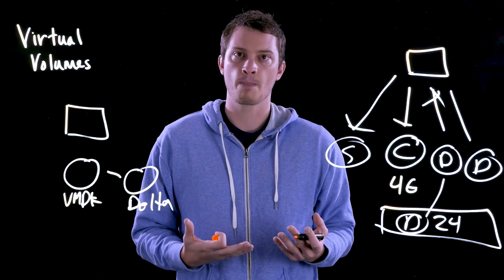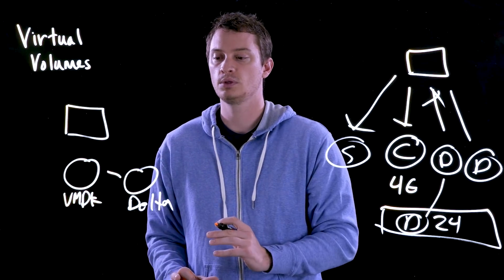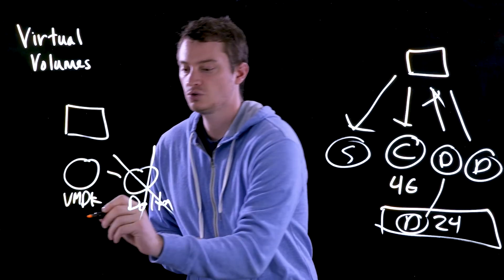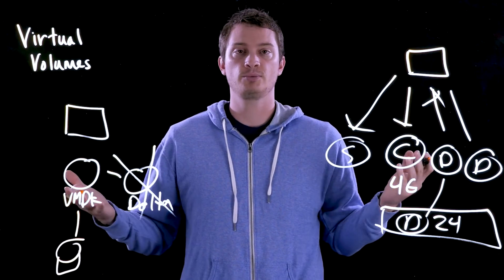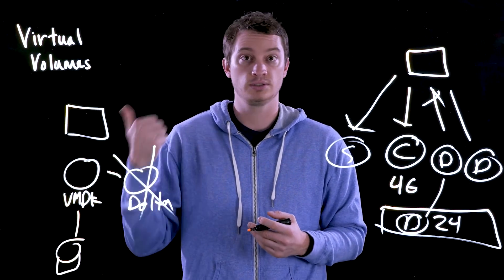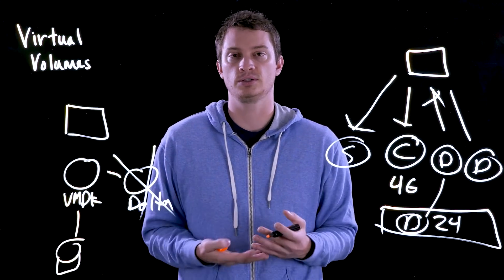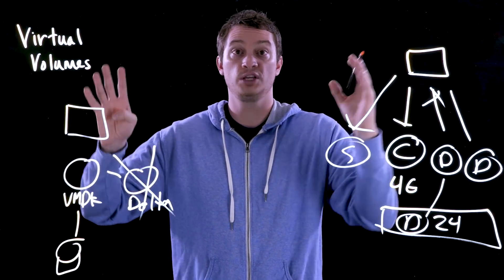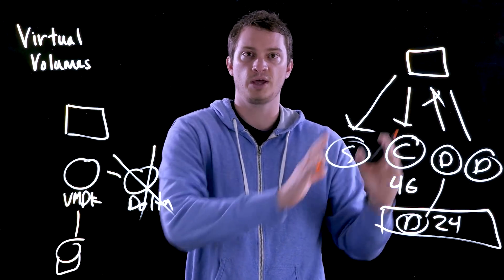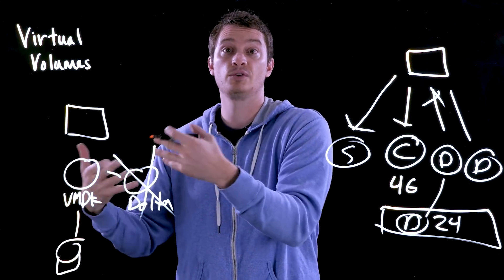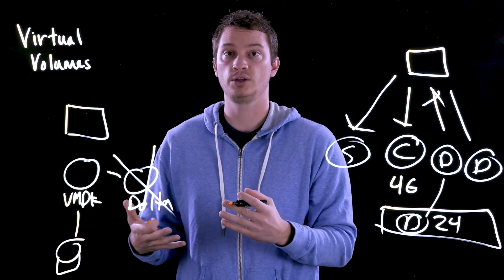But when using vVols, the snapshot changes. Because a data vVol is a volume on the array, instead of this whole delta VMDK thing, it creates an array-based snapshot. On the FlashArray, we can create snapshots instantaneously, restore from them, and clone from them instantaneously — with no performance impact to having them exist. So you can create and manage your VMware snapshots just like before with VMFS, but now keep them around much longer for longer-term retention or even dev/test use cases.